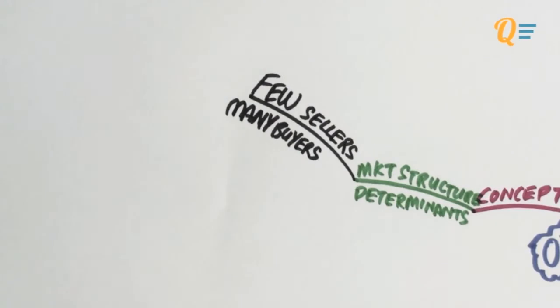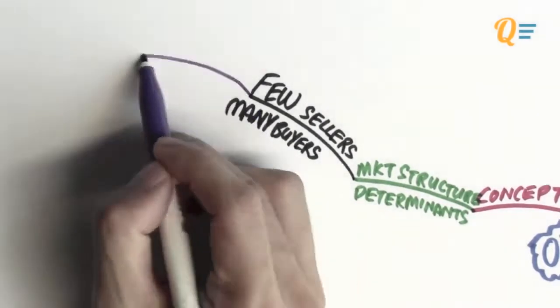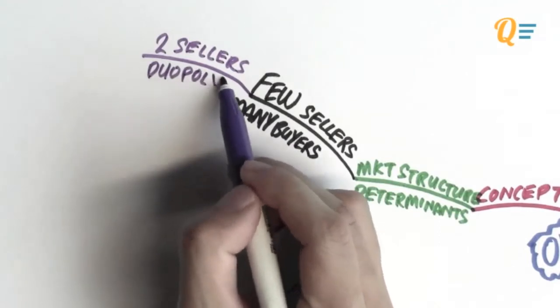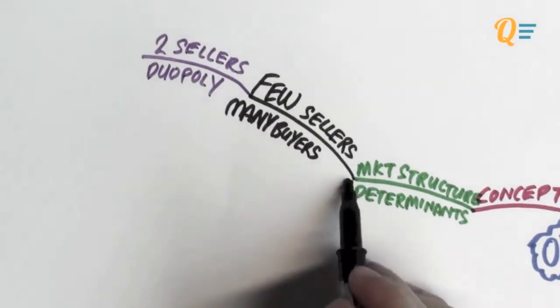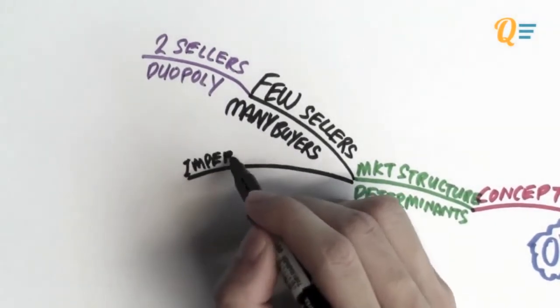When we talk about few buyers, let's be a bit more specific about it. For the purpose of Introduction to Economics, we're only going to be talking about two sellers in this market. And we call that a duopoly.